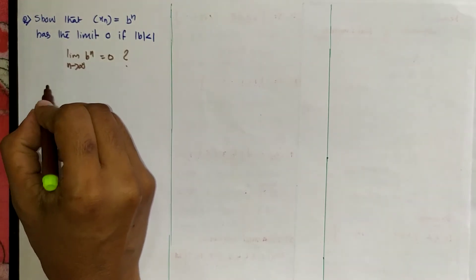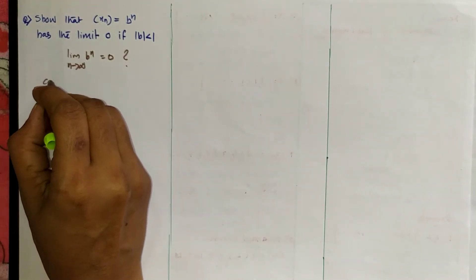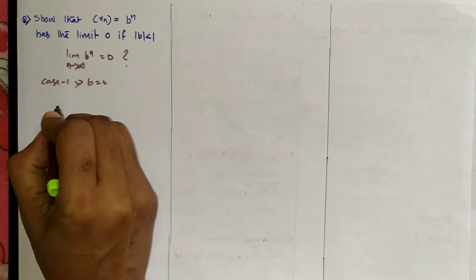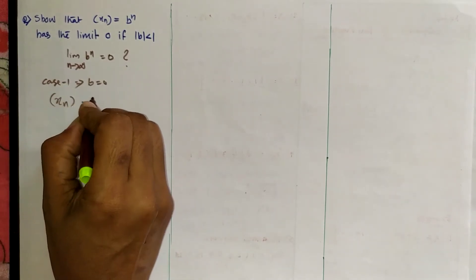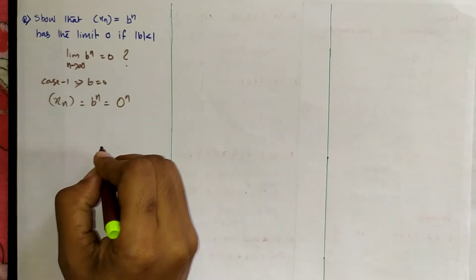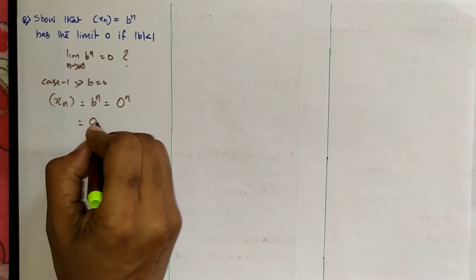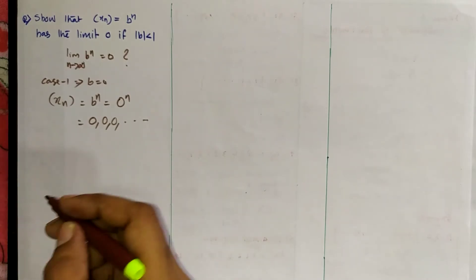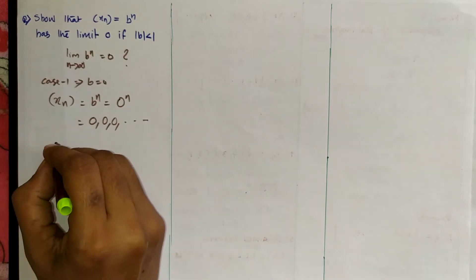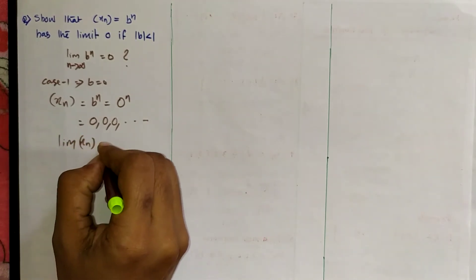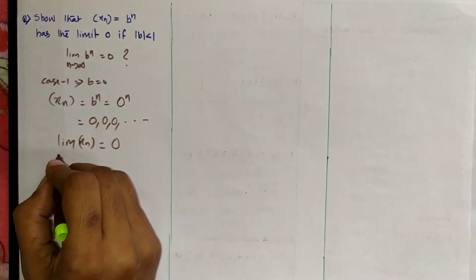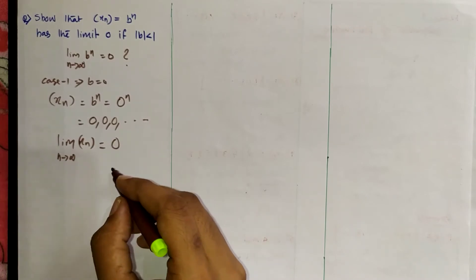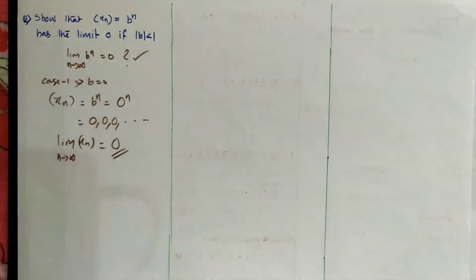We consider two cases. First case: b equal to 0. If b equal to 0, then xn equal to b raised to n equal to 0 raised to n, that is equal to 0, 0, 0, etc. So in this case, limit xn equal to 0. The limit n tends to infinity of xn equals 0. Proof is okay.